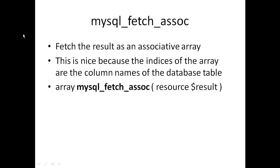You also have mysql_fetch_assoc, which fetches the results as an associative array. This is nice because the indices of the array are the column names of the database table. So whereas mysql_fetch_row uses numeric indices representing the column number, with mysql_fetch_assoc you get indices that are the column names. That means if you added a column into the middle of a database table, you wouldn't have to change all your fetch_row calls — you're just referencing by column names.